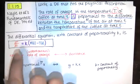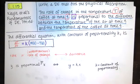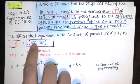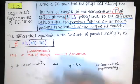is proportional to, means is equal to k times. And then we had to interpret this last part of the sentence, the difference between the temperature M of the air at time t and the temperature of the coffee at time t, and that difference is denoted that way. So that is one way that I might write the answer.